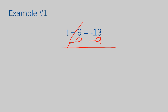The only thing left now on the left side of the equal sign is the T, so I'll bring it down, write my equal sign again, and rewrite this. It's going to look like T equals negative 13 minus 9. I wrote it like this on purpose because I want you to understand that now you have created your own integer problem. You've already learned how to solve problems with integers, so this is a subtraction problem that has integers in it.